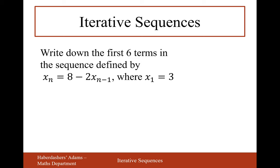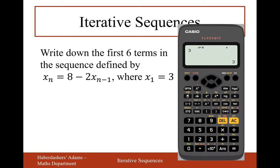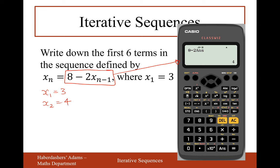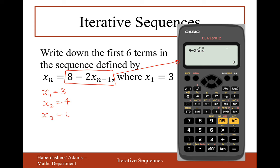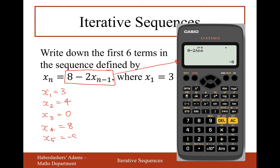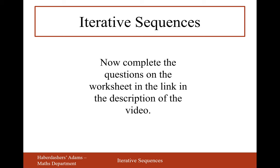One more before the worksheet. Put 3 as the input into your calculator to start. Type out the formula using the answer button where you have xₙ₋₁. Press equals and you'll get 4. Press equals again and you get 0, because 2×8 minus 2 lots of 4 = 0. Then the next number will be 8, then minus 8.